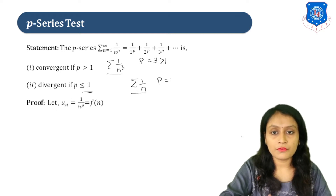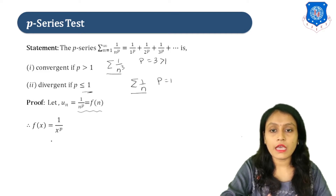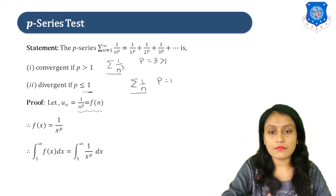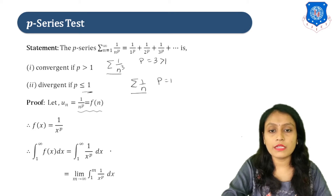Now let's study its proof. Consider u_n equal to 1 upon n raised to P, and this we will consider as F(n). We will apply Cauchy's integral test. So firstly we write F(x) = 1 upon x raised to P. This function F(x) is continuous, decreasing, and positive in the interval 1 to infinity. So we find the integral from 1 to infinity of F(x) dx, that is the integral of 1 upon x raised to P. This is an improper integral, so we write it in the form of a limit: limit m tends to infinity, integral from 1 to m of 1 upon x raised to P dx.